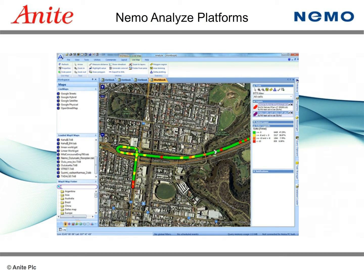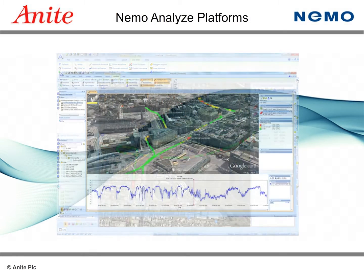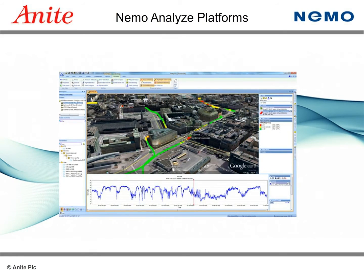NEMO Analyze Standalone and Enterprise comes in three editions. The NEMO Analyze Lite version is limited to statistical reporting of drivetest data, enabling statistical reporting with an extensive set of predefined templates. The NEMO Analyze Standard version is the perfect solution for most common post-processing and statistical reporting tasks. It comes preloaded with a full set of graphs, maps, and other data views. Additionally, statistics can be given based on operator, log file, time frame, and other attributes. The standalone version comes preloaded with customizable workbook templates and report templates.